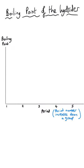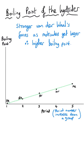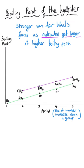In an exam question, you might be asked to interpret a pattern in boiling points as you move down a group. As already mentioned, for the noble gases the van der Waals forces get stronger and the boiling point increases as we move through the periods. The same thing applies to hydrides. For the group four hydrides, the boiling point increases as we move down — methane has the lowest, then silicon tetrahydride, then germanium, then tin — because tin has more electrons and stronger van der Waals forces.